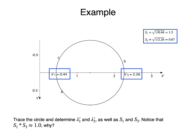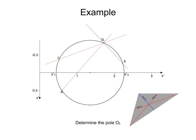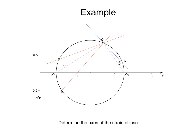From the Mohr Circle, we can read lambda prime 1 and lambda prime 3, and compute S1 and S3. S1 is equal to 1.5 and S3 is equal to 0.67. Notice that S1 times S3 is equal to 1 — why is that the case? Now, from the lines A, B, and C, we can trace lines parallel to them. These lines will intersect at the pole of the Mohr Circle OL. From the pole, we can determine the orientations of S1 and S3 by tracing lines from the pole to lambda prime 1 and lambda prime 3, respectively.